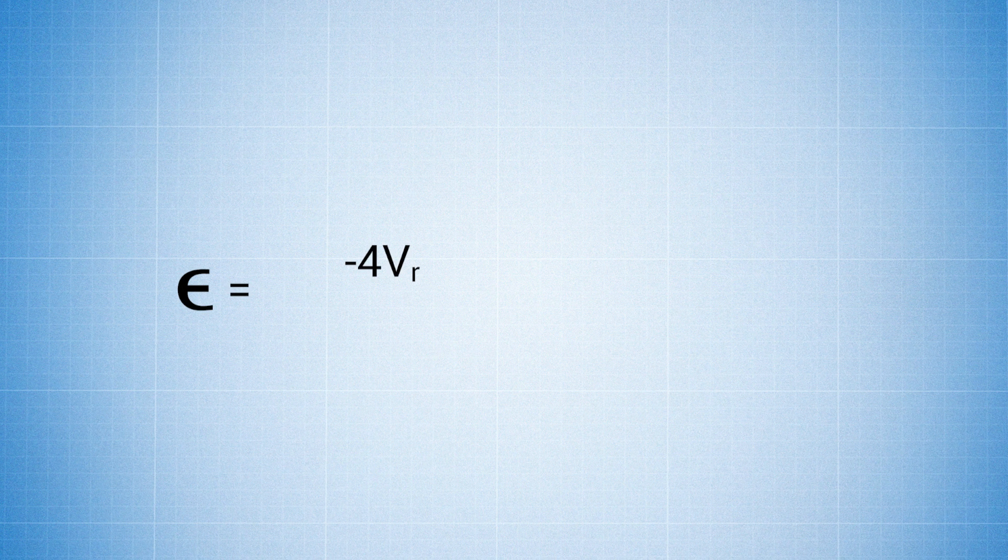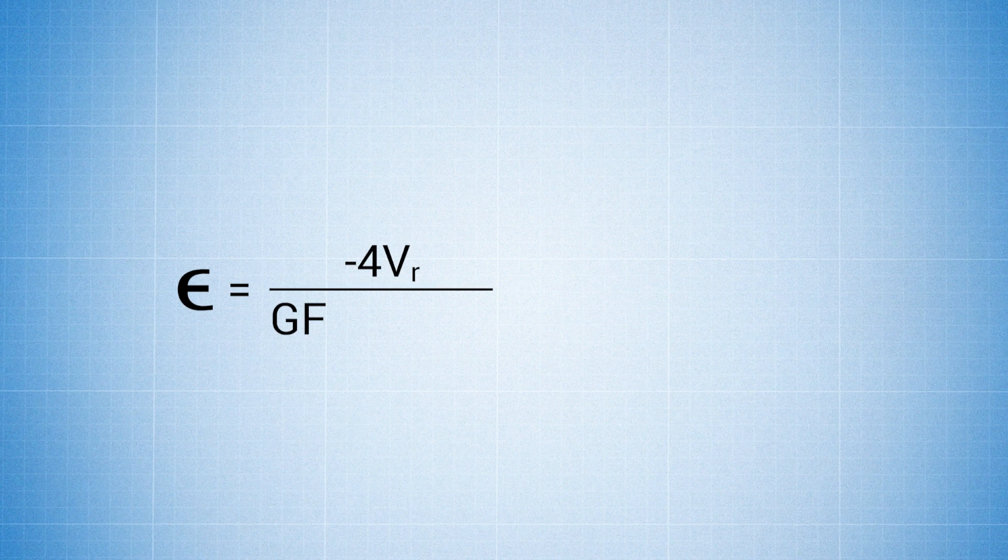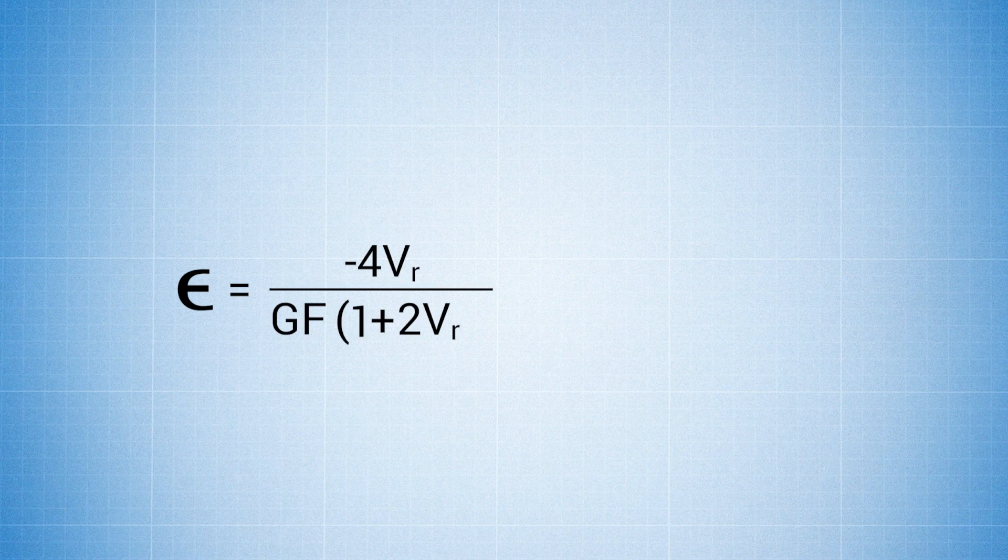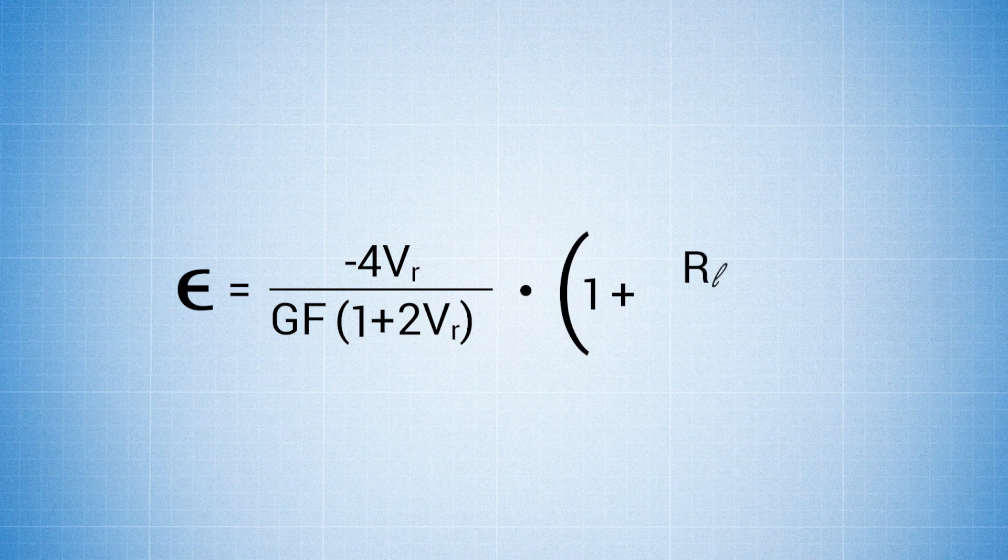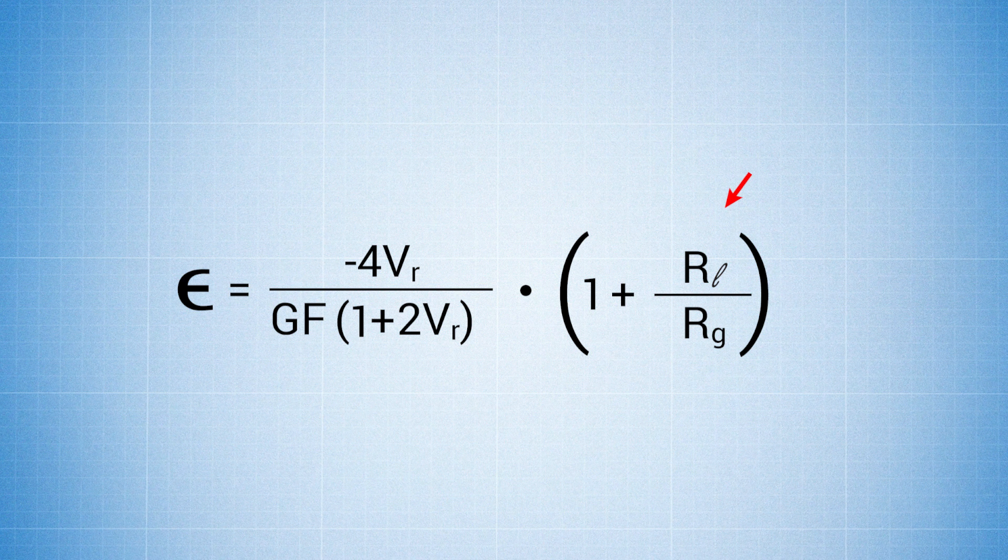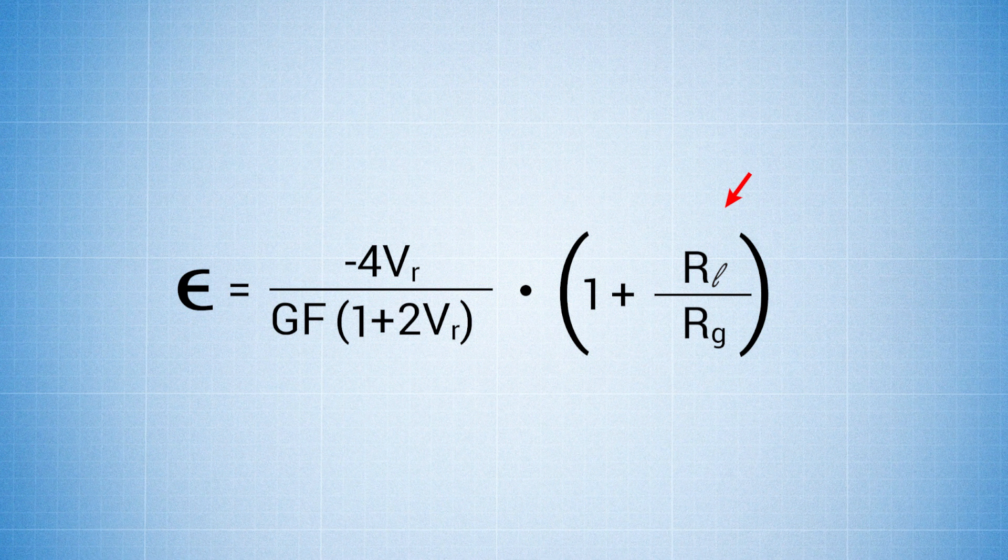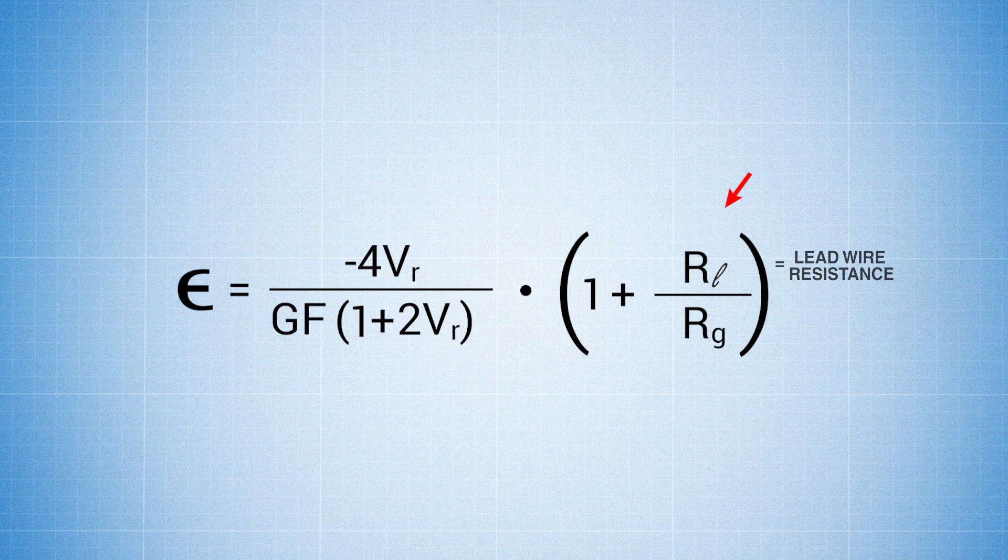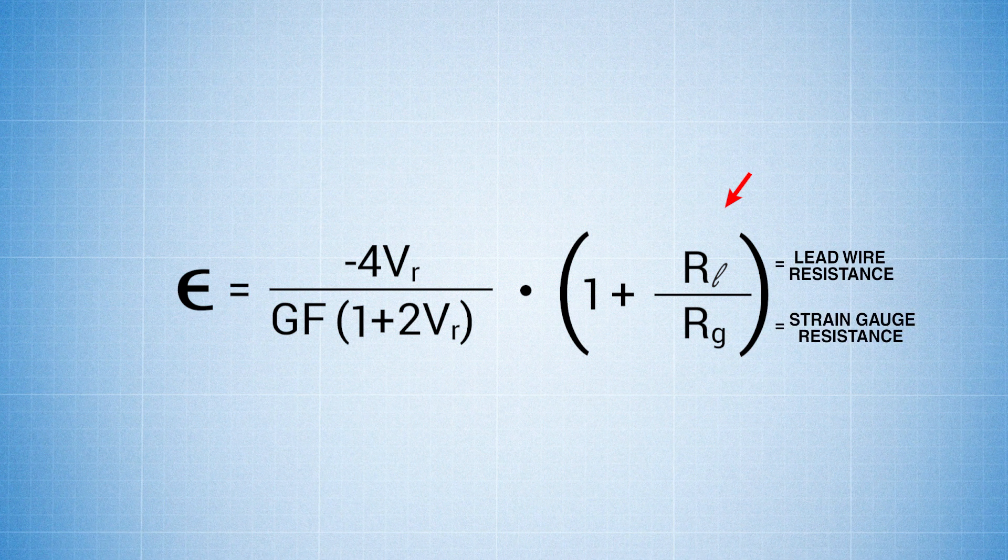Now let's look at the formula we'll use to calculate microstrain. Epsilon equals negative 4Vr over GF times 1 plus 2Vr, multiplied by 1 plus Rl over Rg. In the parentheses where you have 1 plus Rl over Rg, Rl indicates lead wire resistance and Rg indicates the resistance of the strain gauge.